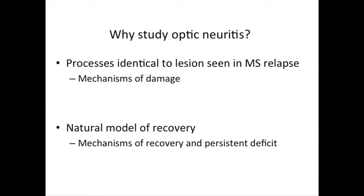Why study optic neuritis at all? There are two main themes. First, the processes that occur in optic neuritis under the microscope are very similar to what happens in lesions in other parts of the MS brain responsible for relapses. So understanding the mechanisms of damage will help translate this knowledge to lesions affecting other parts of the brain. Second, optic neuritis tends to recover naturally, providing a natural model to study recovery — and understanding those mechanisms may help us enhance them for better patient outcomes.